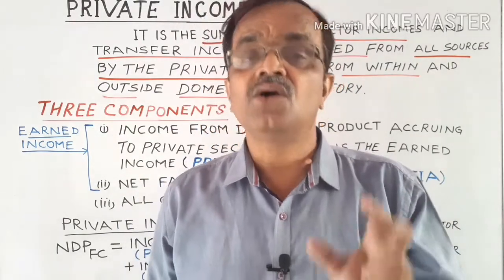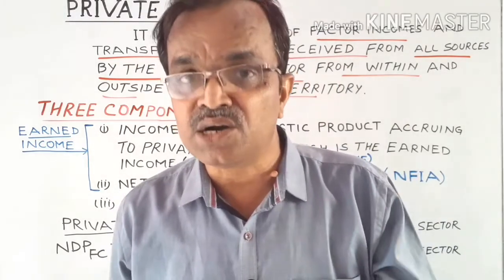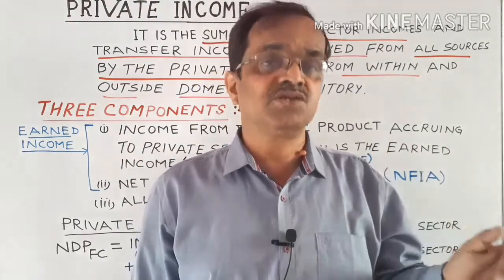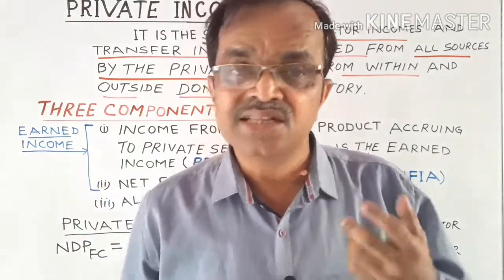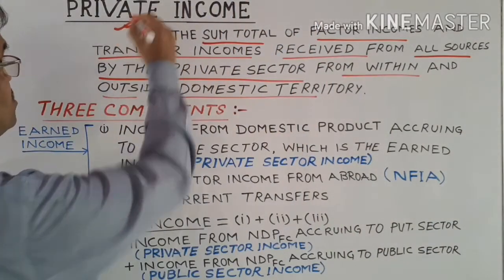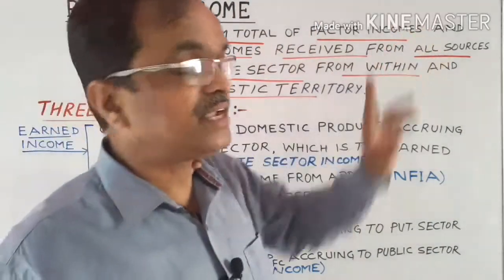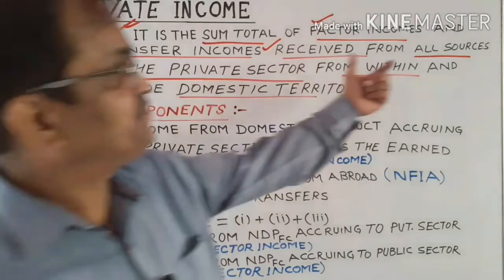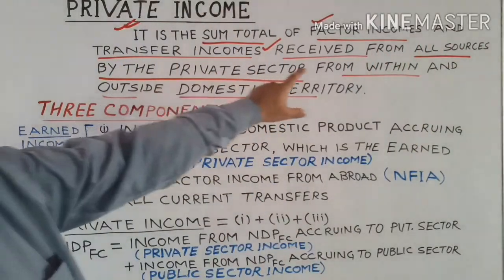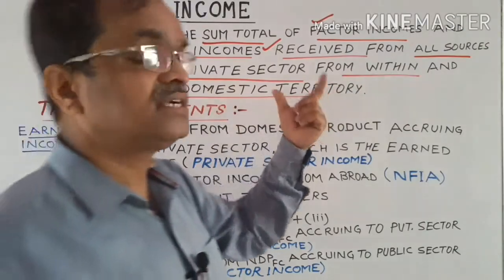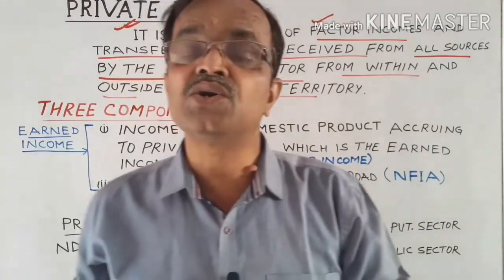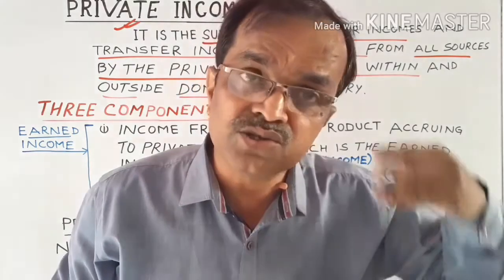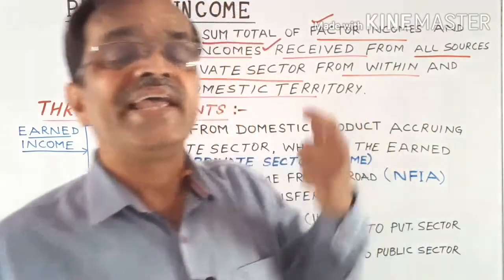Therefore, we may define private income as the sum total of factor income (earned income) and transfer incomes received by the private sector from all sources — from within and outside the domestic territory. This means it also includes NFIA (Net Factor Income from Abroad). It does not include only factor income generated within the domestic territory, but also from outside.